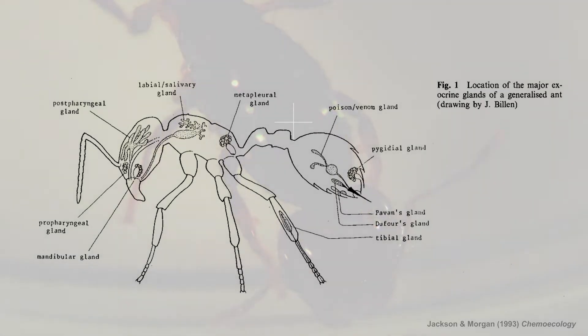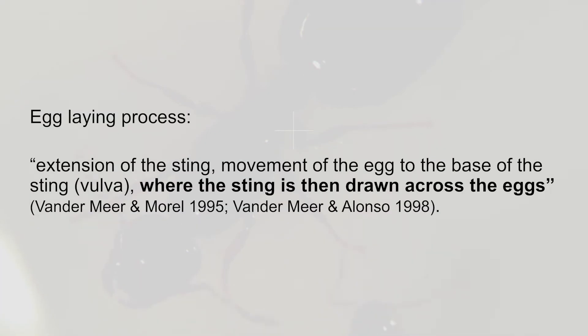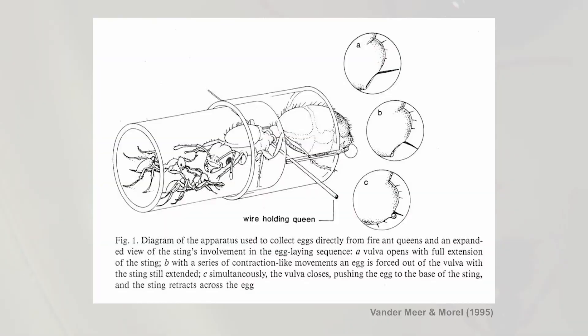In fire ants, the poison sac is one of the main sources for queen pheromones, and it's directly connected to the sting. And since the eggs are coming out from the vulva, which is very close to the sting, people suggest that the queen would use the sting to coat the eggs with pheromones.